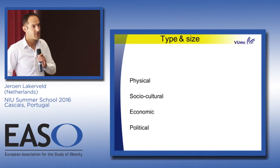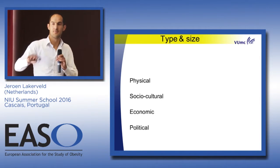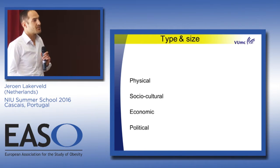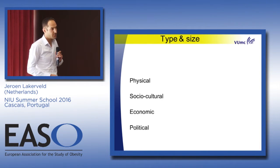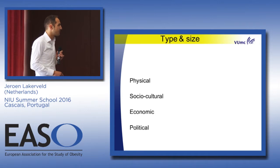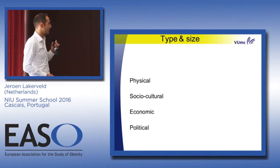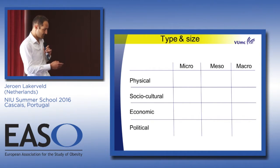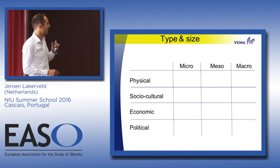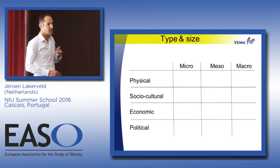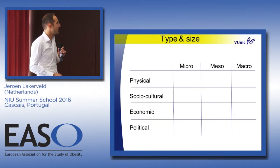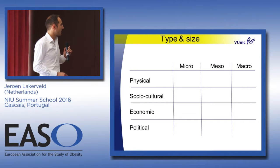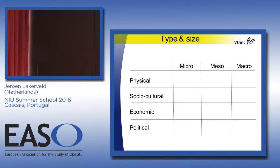The types of environment include: the physical environment — what is available, what you can really touch; the sociocultural environment — the norms and values in your network; the economic environment — the price of broccoli versus a Mars bar; and the political — the rules and regulations. Together, type and size form a grid. For example, the micro physical environment: how many screens are in the house? The micro political: how many hours are kids allowed to play on an iPad? And macro political: regulations or taxes on sugar-sweetened beverages.